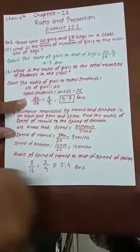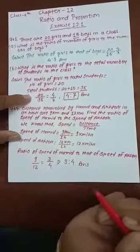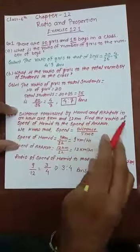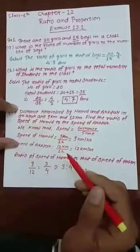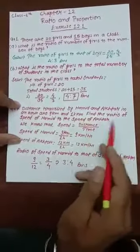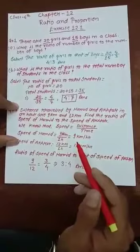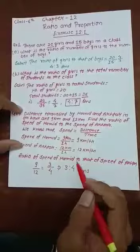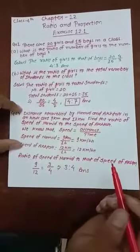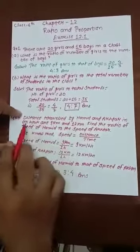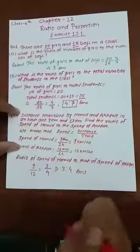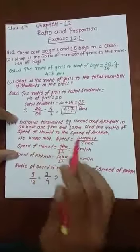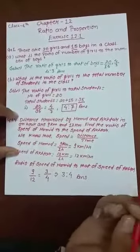The ratio between girls and total strength is 4 as to 7. Now the next question: the distance traveled by Hamid and Akhtar in one hour are 9 kilometers and 12 kilometers respectively. We have to find the ratio of the speed of Hamid to the speed of Akhtar. This is a simple question but we need to use the formula related to speed.